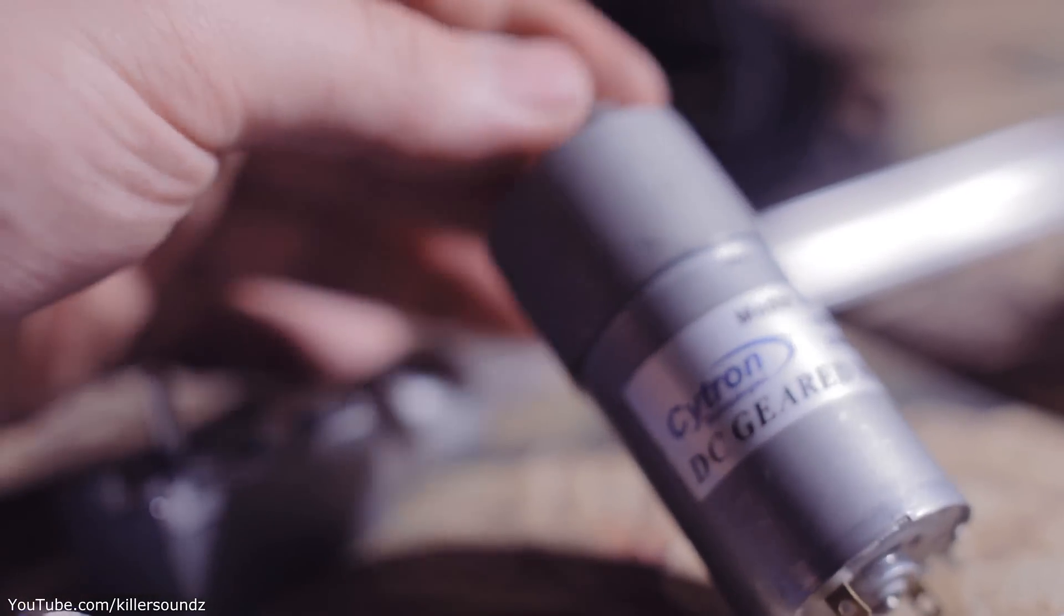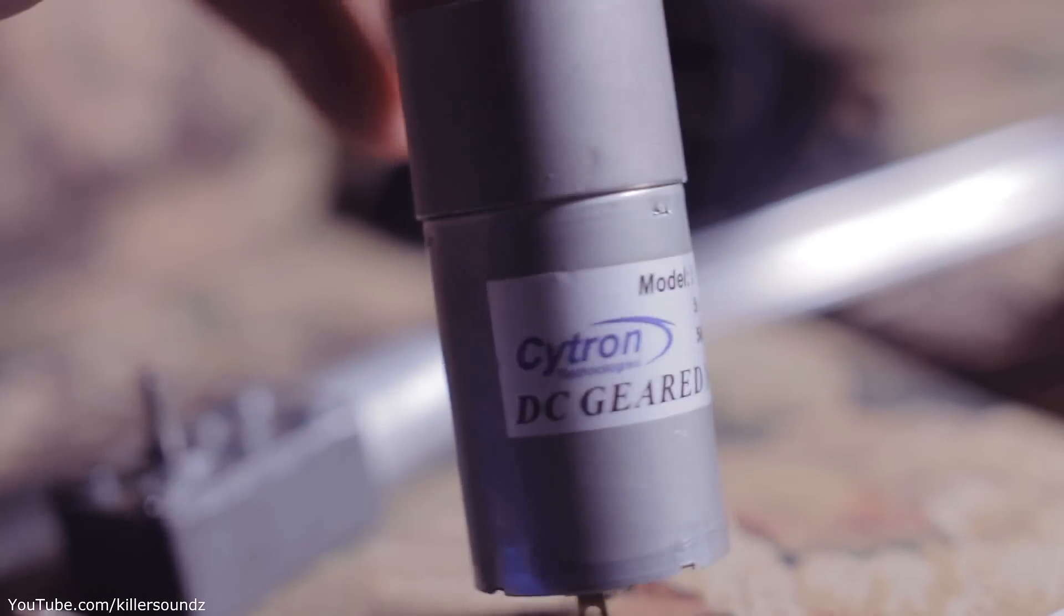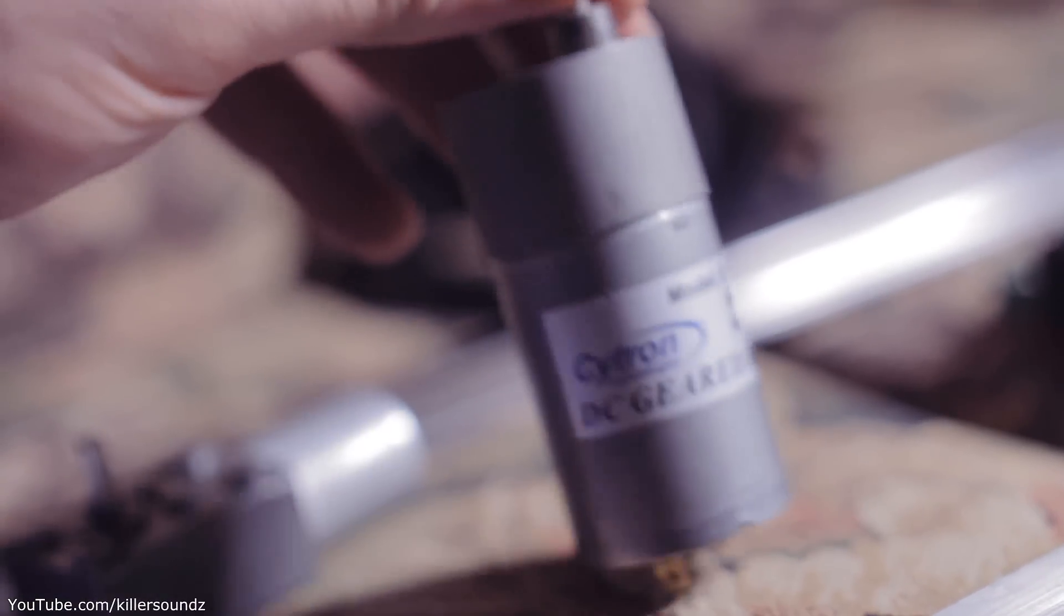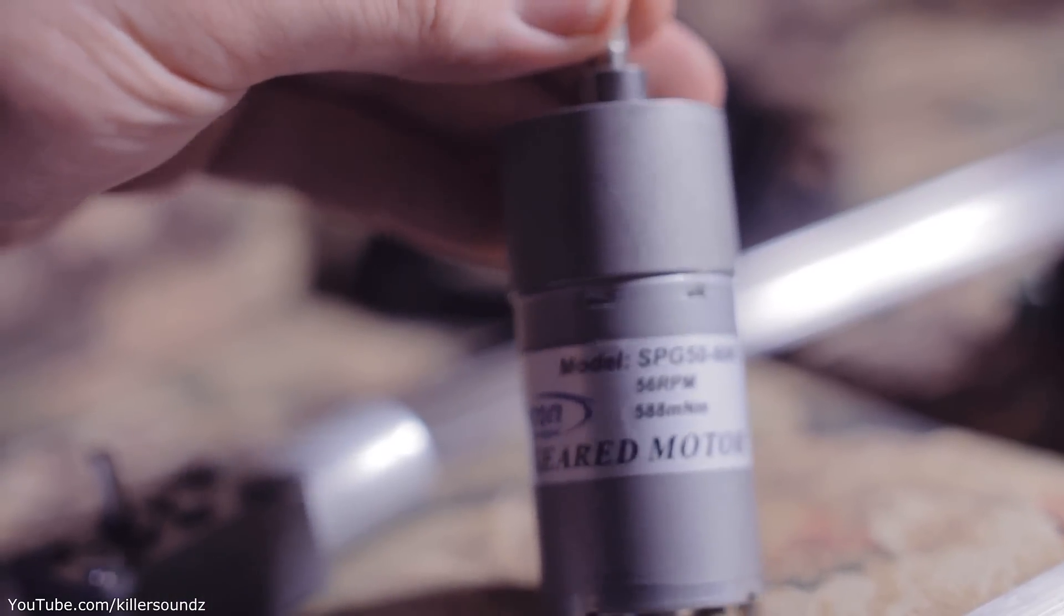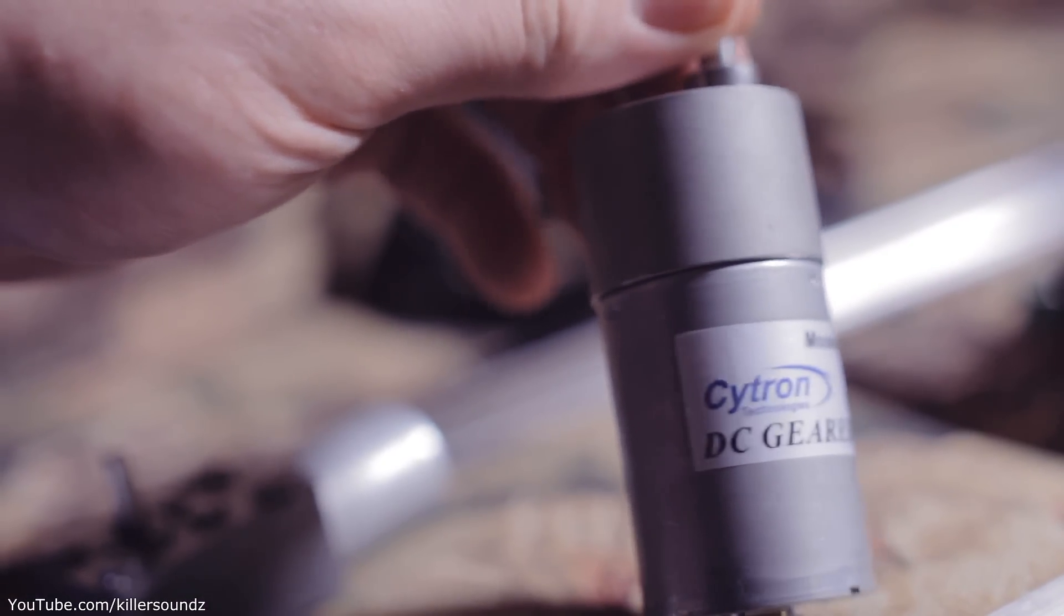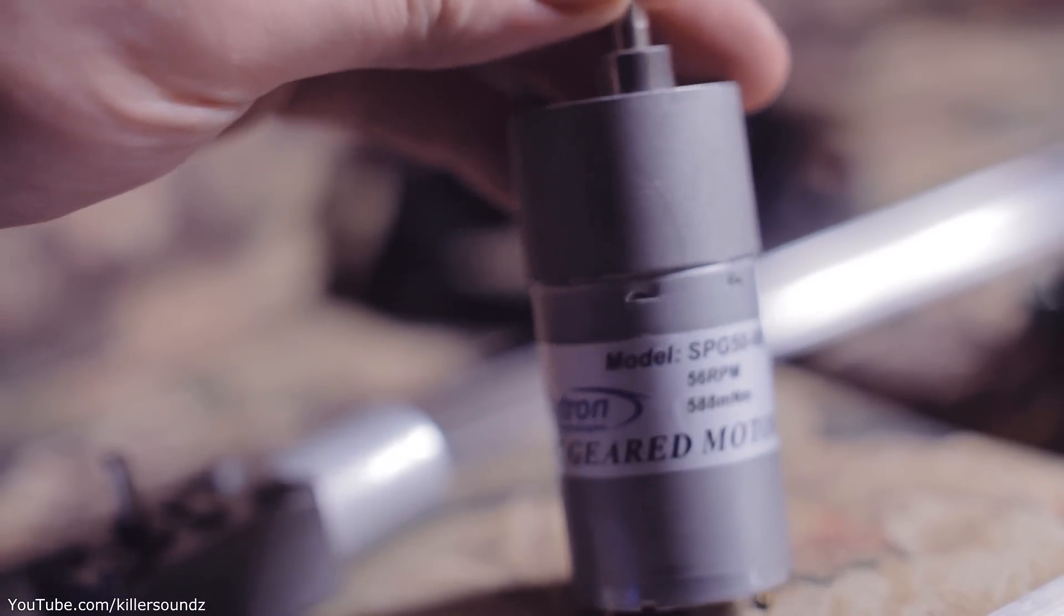This gear motor here is worth mentioning. This is a Cytron 56 RPM gear motor. The great thing is they make these in 17 RPM too, it's the same thing so I could swap them out if I want to do time lapse and make the motor go really, really slow, I can put the 17 RPM on here.